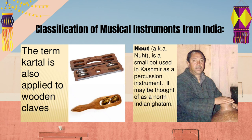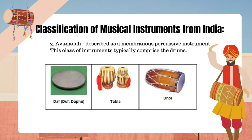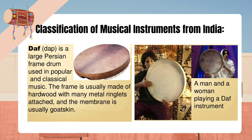Naut, also known as Nut, is a small pot used in Kashmir as a percussion instrument. It may be thought of as a North Indian Ghatam. Avanad: described as a membranous percussive instrument, this class of instruments typically comprises the drums. Daph, or Dap, is a large Persian frame drum used in popular and classical music. The frame is usually made of hardwood with many metal ringlets attached, and the membrane is usually goatskin.